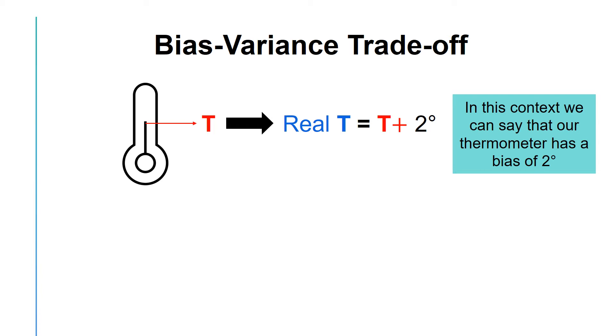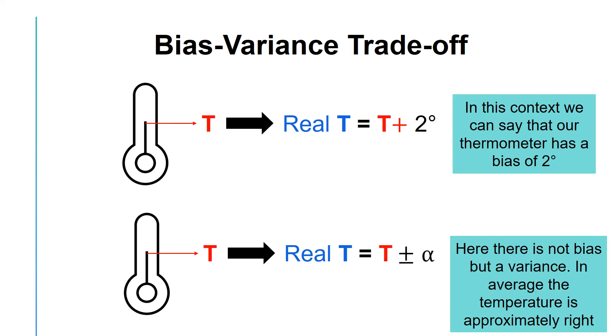Now, let's consider a different scenario. This time, let's say that on average, my thermometer is right, but sometimes it shows 1 degree higher than the real temperature, and sometimes 3 degrees lower, and so on. So in general, there is a variation. In this scenario, there is no bias, but there is a variance.